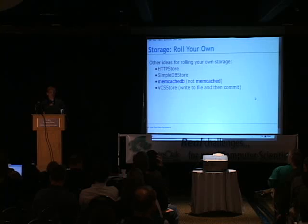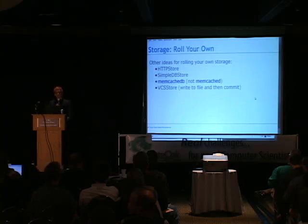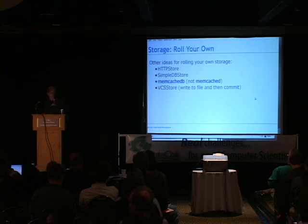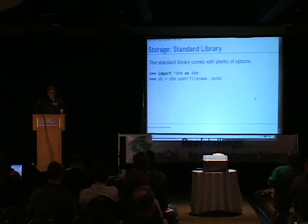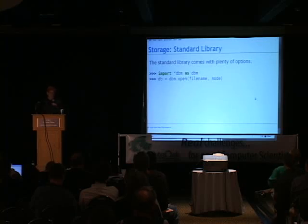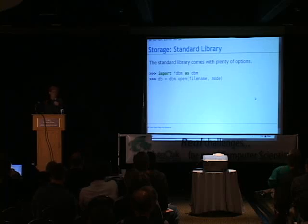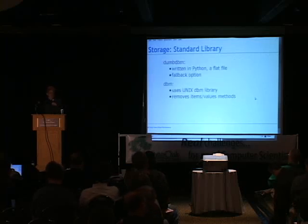Clearly this isn't a very robust solution, but you can add file locking, thread locks, and actually get something somewhat robust. Other ideas for DictMixin: you could map it to a RESTful resource and make an HTTP store, you could use Amazon SimpleDB. The standard library also has options — the star-dbm modules. You import a dbm module, open a file name with a mode, and get a mapping object that works like a dictionary but will persist the data.